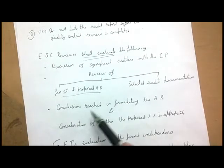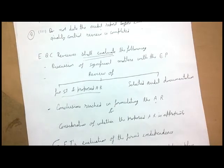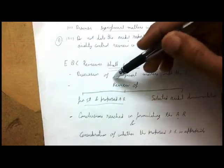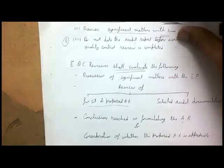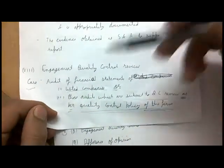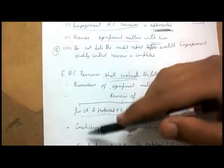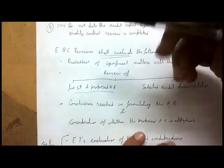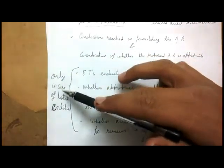The EQCR also evaluates the conclusions reached in formulating the audit report, and considers whether the proposed audit report is appropriate. These evaluation points apply to both listed entities and other entities required to have an EQCR as per the firm's quality control policies.